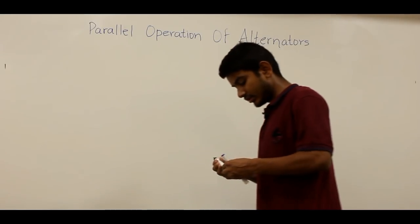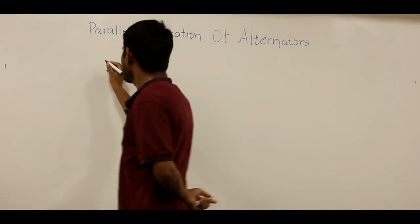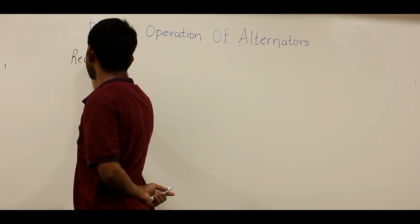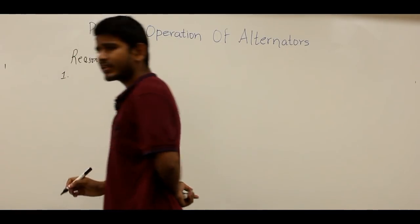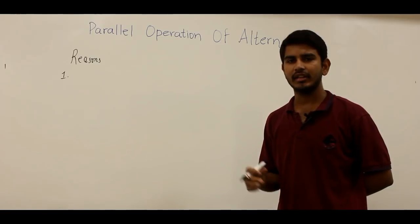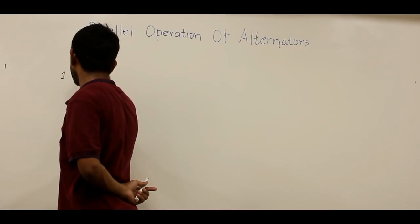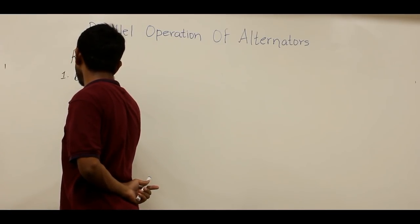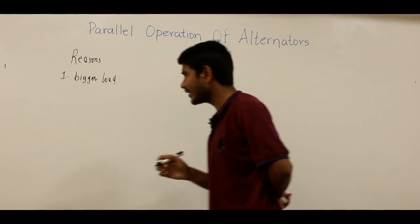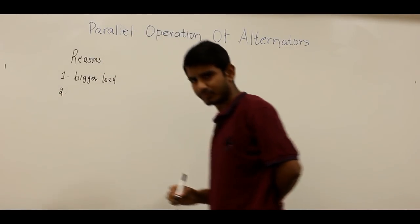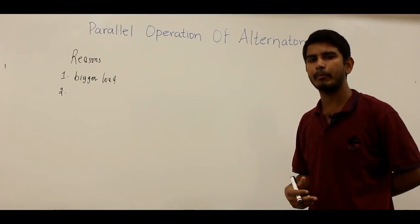Let us discuss the reasons for operating alternators in parallel. The first reason is that several alternators can be connected in parallel so that they can supply a bigger load than a single alternator. The second reason is that many new alternators can be connected in parallel with minimal disturbance of the initial installation according to requirements, to fulfill future increasing demand.